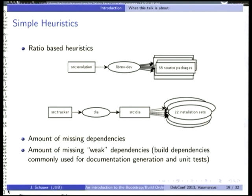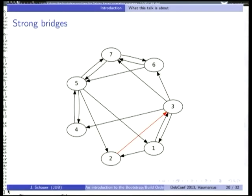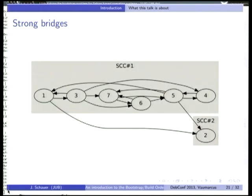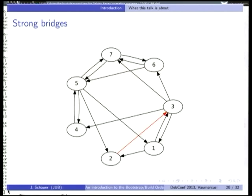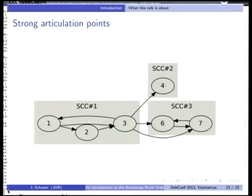Another thing is what we call weak dependencies — a set of user-picked dependencies commonly used for documentation generation, which is of course also only heuristic and not always true. Another thing is strong bridges: if we take this graph, a strong bridge would be a red edge — if we remove it, it splits the graph into more strongly connected components. It's all done automatically; you don't need to search the graph visually, because you get it in the HTML pages. Or strong articulation points — not an edge but a vertex — once you remove it, the graph splits into more strongly connected components easier to analyze.